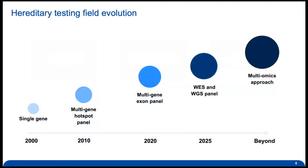In this slide we can see the hereditary testing field and its evolution with the evolution of technology. At the start of 2000 we had single gene testing, then a trend towards multi-gene hotspot panel testing, then multi-gene action panels with NGS were broadly adopted. Nowadays we see more and more whole exomes and whole genomes being sequenced, starting to become the new trend for hereditary disease testing. More data verticals will soon be combined to properly and more accurately assess each clinical case.